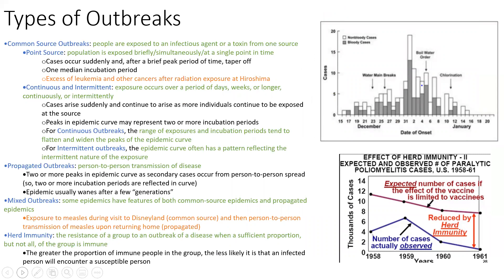There are several types of outbreaks. A common source outbreak is where people are exposed to an agent from a single source. A point source outbreak is a type where exposure occurs at a single point in time — for example, the excess leukemia cases after Hiroshima. Continuous outbreaks occur over a longer period, like contaminated water in Flint, Michigan. Propagated outbreaks involve person-to-person transmission. Mixed outbreaks combine these — a common source patient zero who then propagates the disease.